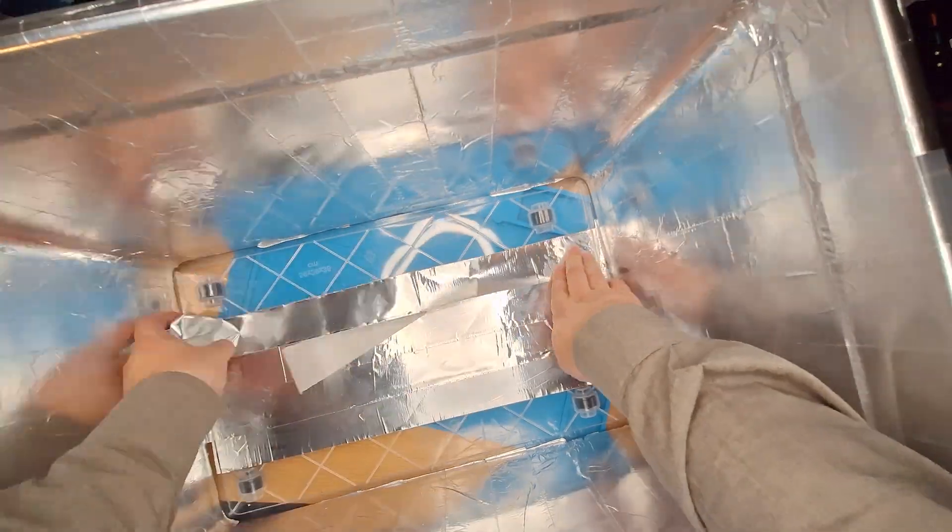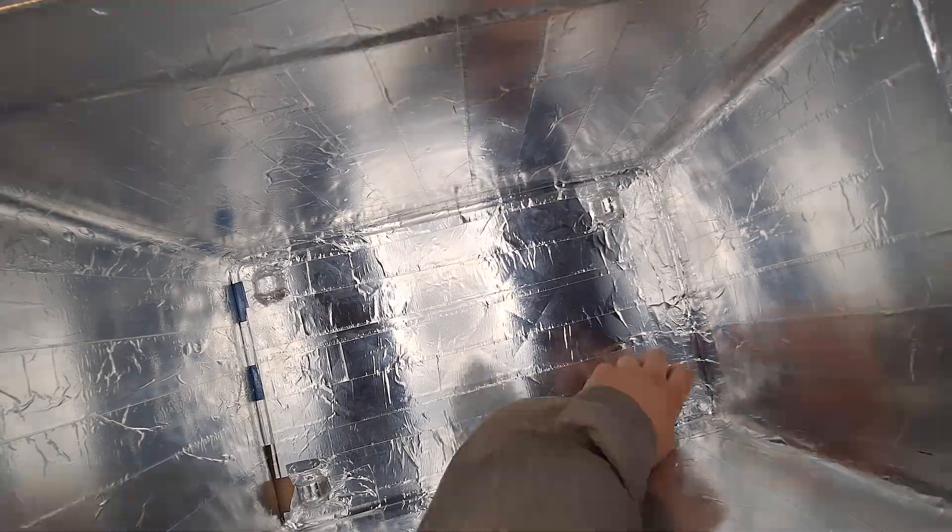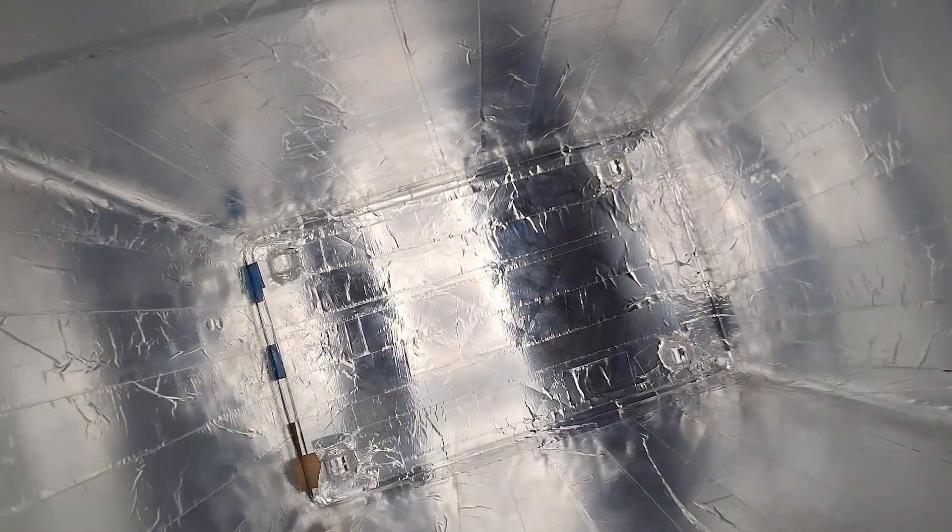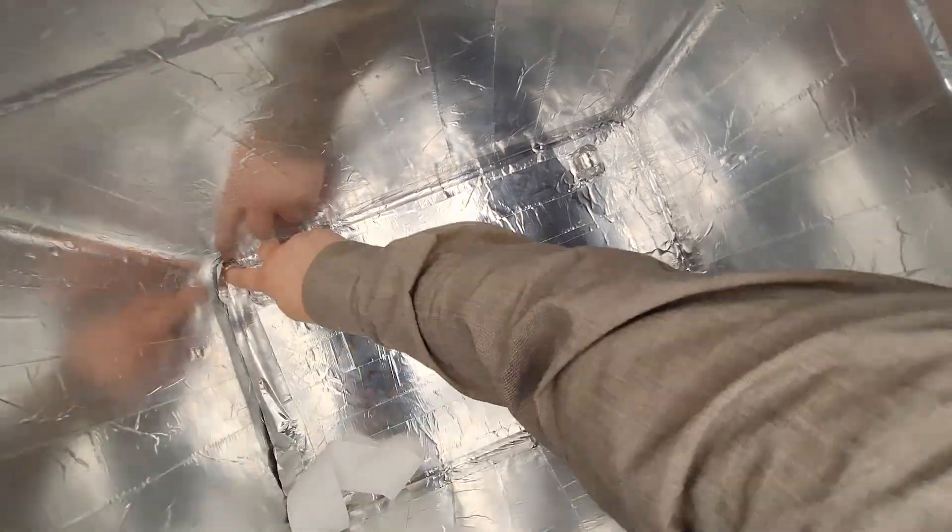The idea is simple: we're turning this box into a UV death chamber. You know, for consoles, not for people. Legal says I need to clarify that. The UV light is going to bounce around like a hyperactive toddler, ensuring every square inch of your console gets the rejuvenating treatment it deserves.